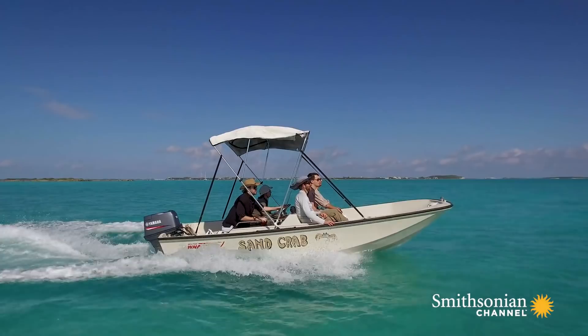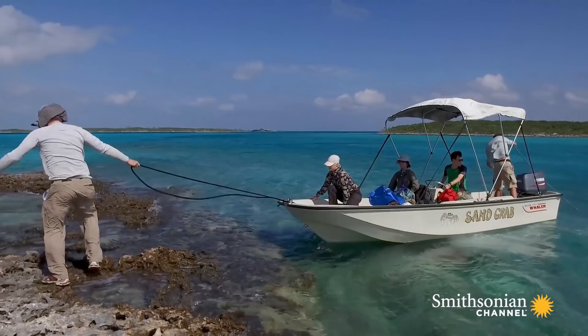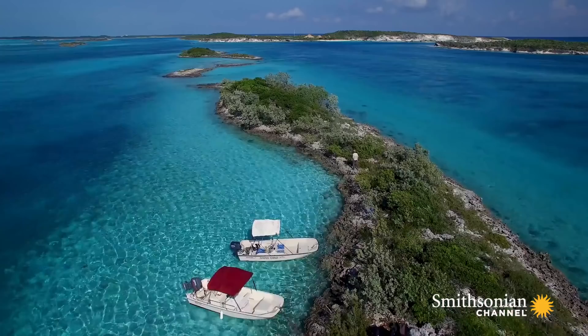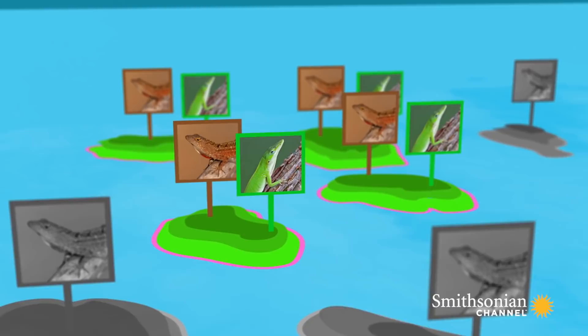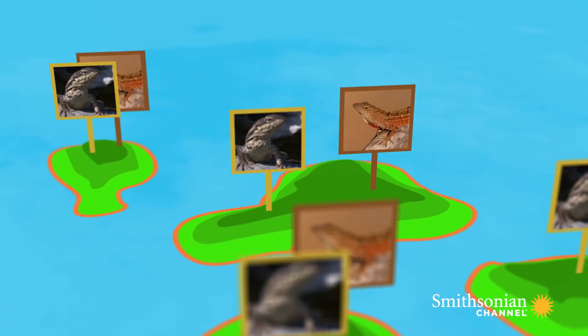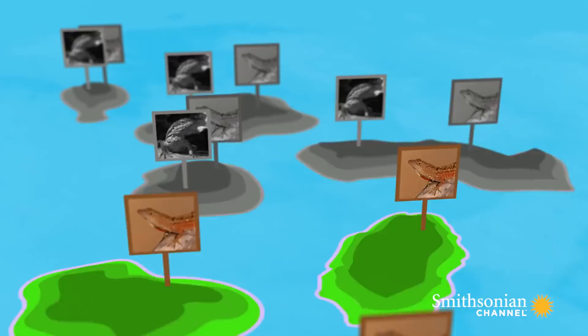In May of 2011 we came to the Bahamas and identified 16 islands that had brown anole populations. We broke those islands into four different groups. To one set of islands we added the competitor of the brown anoles, which is the green anole. To another set of four islands we added curly-tailed lizards, the terrestrial predator of brown anoles. And to another set we added both species — both the predatory curly-tailed lizard and the competitor green anole.